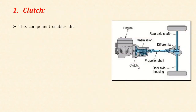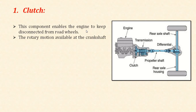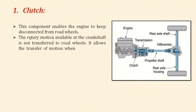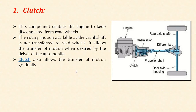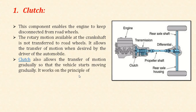The first component is the clutch. In the figure, the clutch transmits power to the transmission — engagement and disengagement are performed using the clutch. This component enables the engine to be disconnected from the road wheels so the rotary motion available at the crankshaft is not transferred to the road wheels. It allows transfer of motion when desired by the driver, and also allows the motion to be transferred gradually so that the vehicle starts moving gradually. It works on the principle of friction.